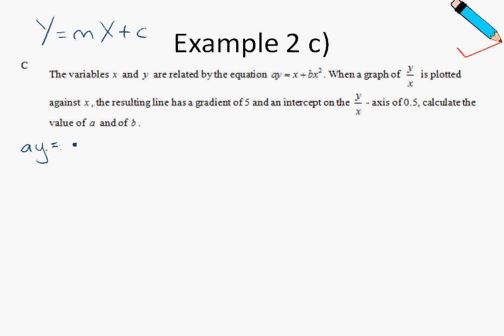So from the given equation, which is ay equals to x plus bx squared, I will divide by x throughout. So I'll get a times y over x equals to 1 plus bx. And I think the other thing that I'm going to do over here is that I will divide by a throughout. So I'll get y over x equals to b over a times x plus 1 over a.